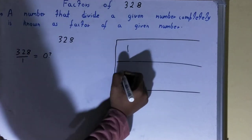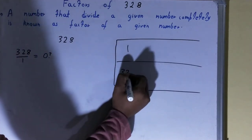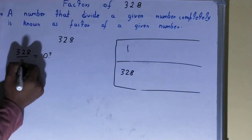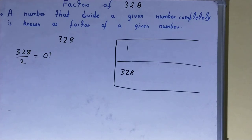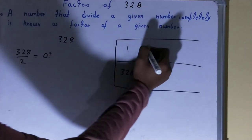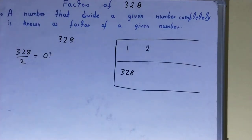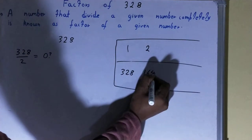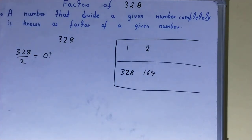With the help of 1 we can find another factor: 1 times what equals 328? So 328 will also be a factor. After 1, we check with 2. Is 328 divisible by 2? Yes, because 328 is an even number and all even numbers are divisible by 2, so 2 is a factor.